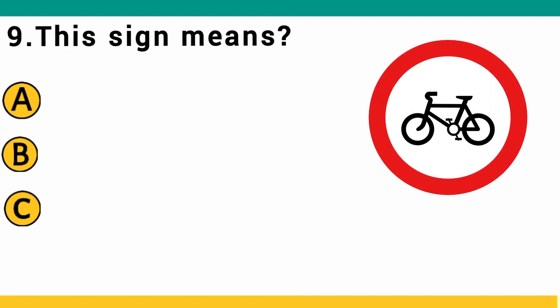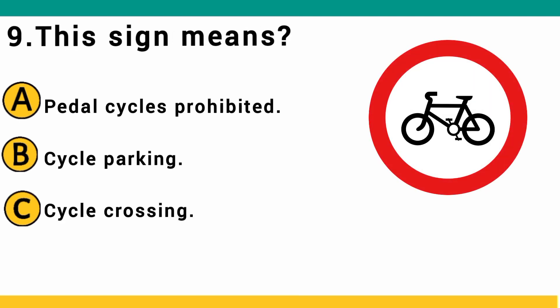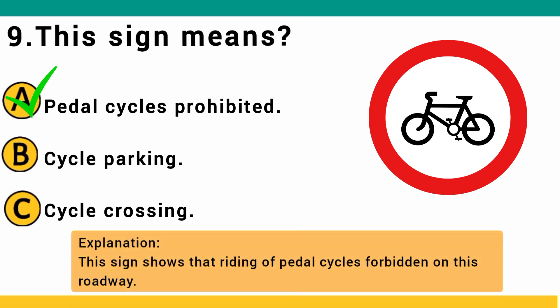This sign means: A) pedal cycle is prohibited, B) cycle parking, or C) cycle crossing. The correct answer is A: pedal cycle is prohibited. This sign shows that riding a pedal cycle is forbidden on this roadway.